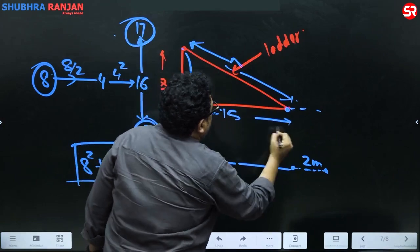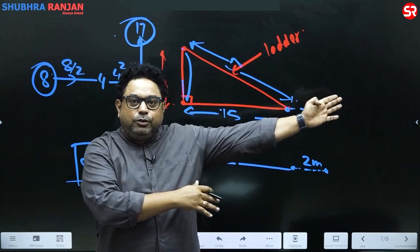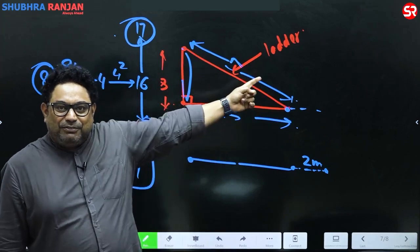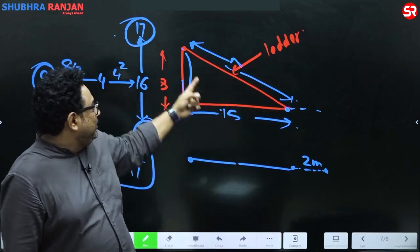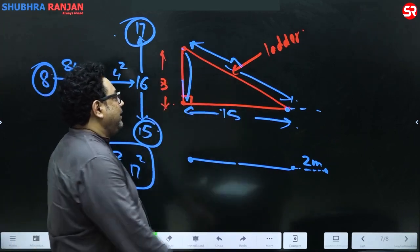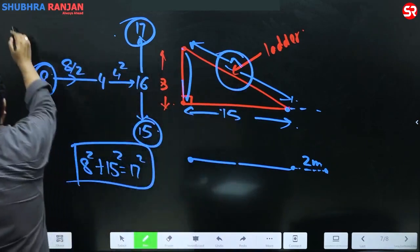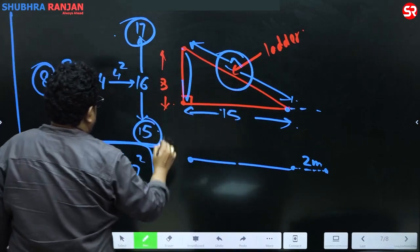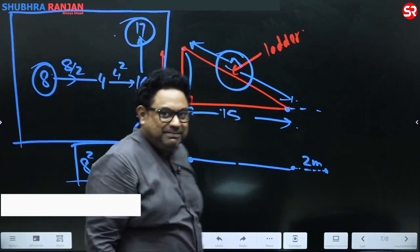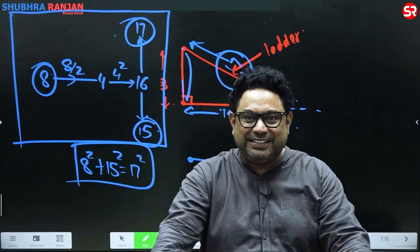Definitely, if you take the bottom of the ladder two meters away from the wall, the top of the ladder will fall to the bottom of the wall. The length of the ladder is seventeen. The trick is awesome — not mentioned anywhere. I hope you like it. Thank you so much!